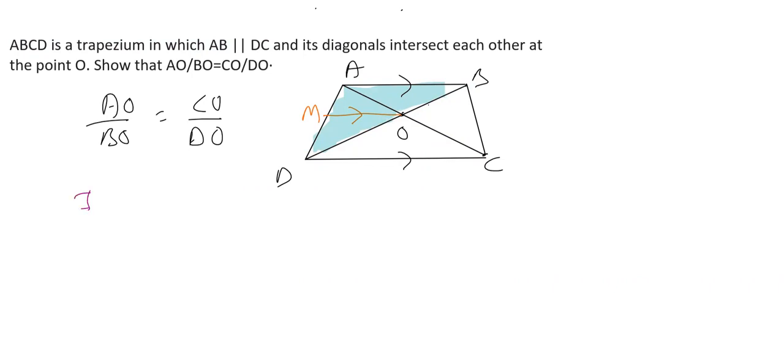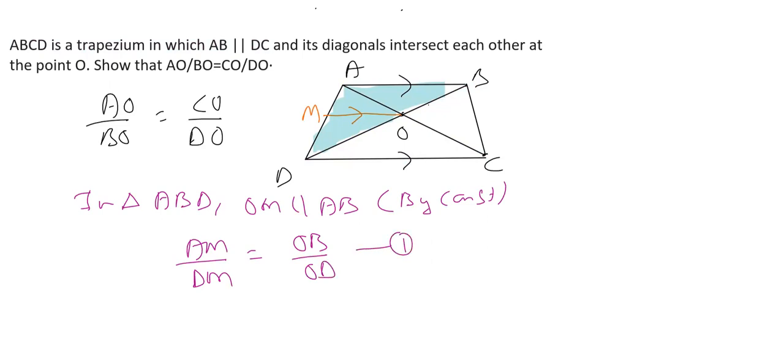Let's first consider the triangle. The triangle here is ABD. We have OM parallel to AB, and thus by construction, we can say that from BPT, AM upon DM will be equal to AO upon OD. This is equation 1, and that is by BPT or you can write Thales theorem, Basic Proportionality Theorem. This is what we got in the first part.